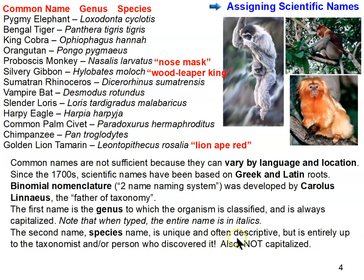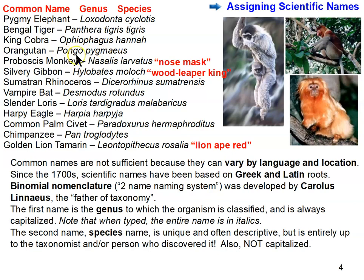The second name is the species name — it's unique and often descriptive, like 'nose-mask.' It's entirely up to the taxonomist. It can even be based on the person who discovered the species — if you discover a species, you can name it after yourself and live forever in the taxonomy system. The species name is not capitalized. So: genus is capitalized, species is not, and the whole thing is italicized when typed.